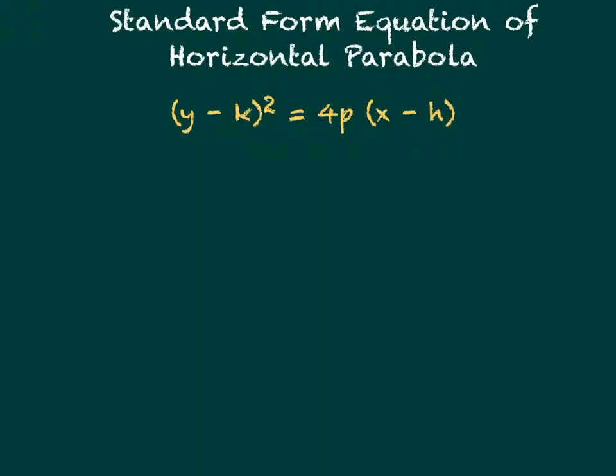The standard form equation of horizontal parabolas is a little bit different. Our y is the squared term rather than x. The equation is (y-k)² = 4p(x-h), and again, p can never equal zero.